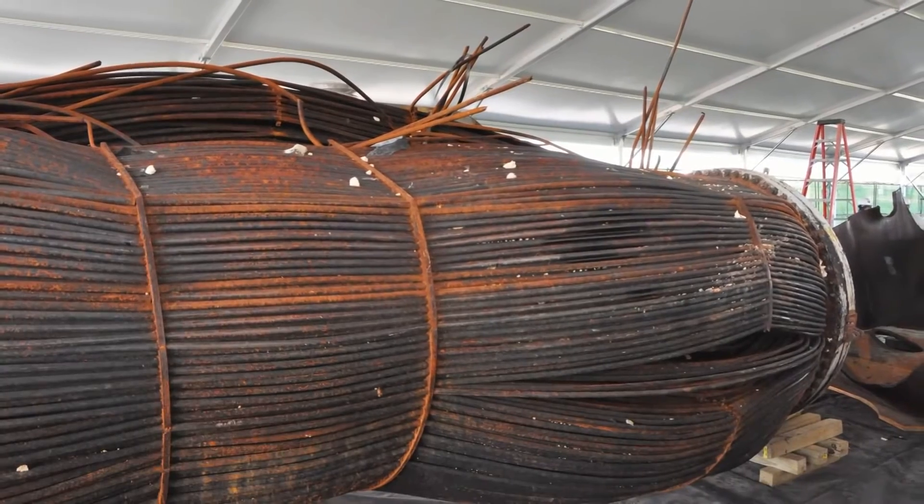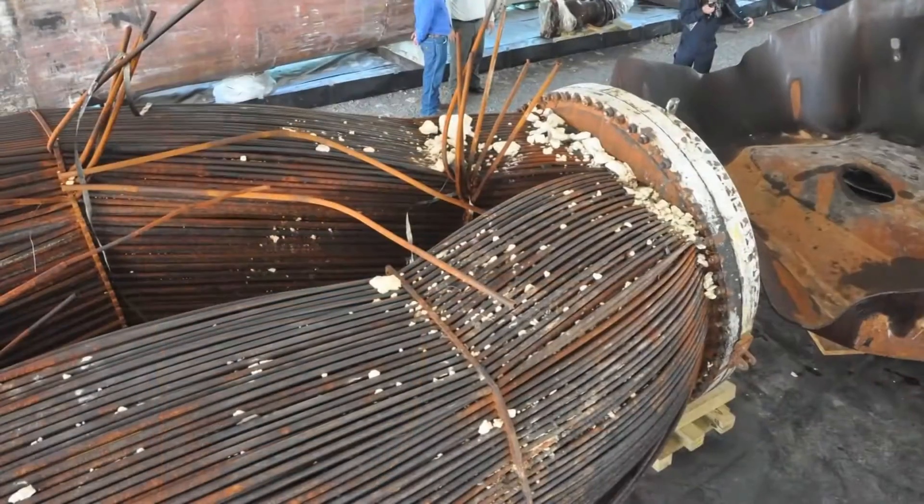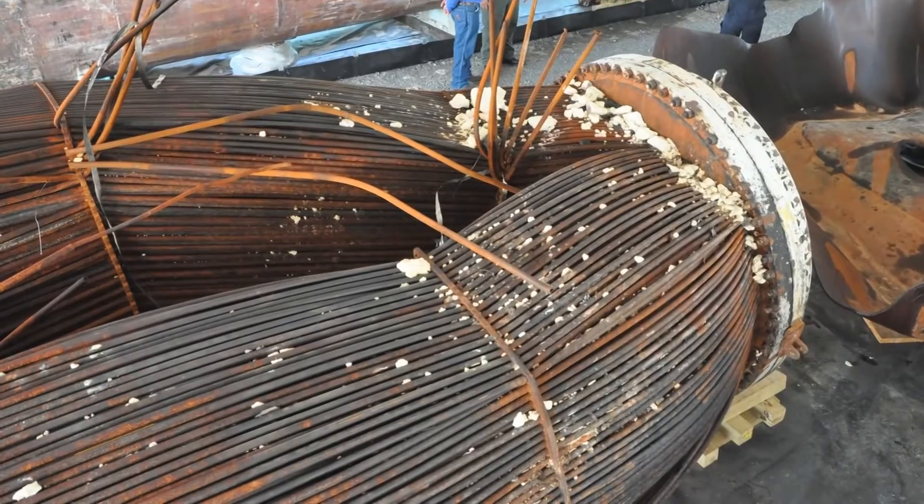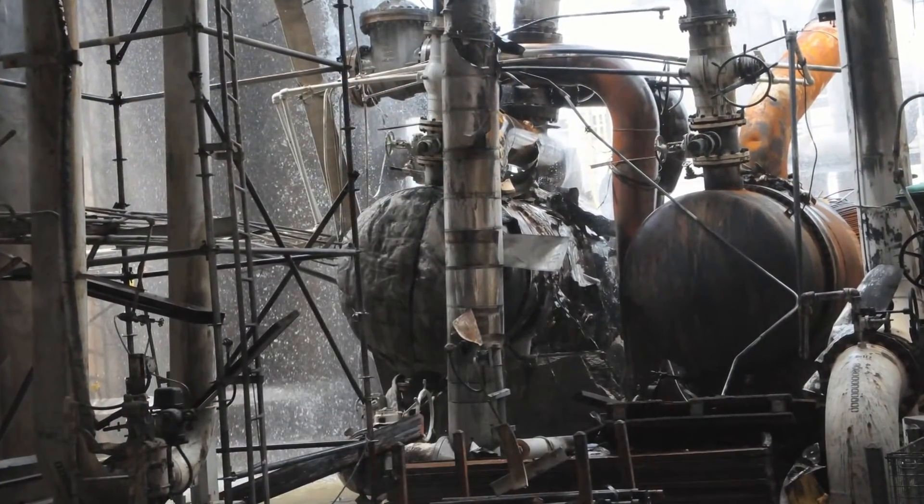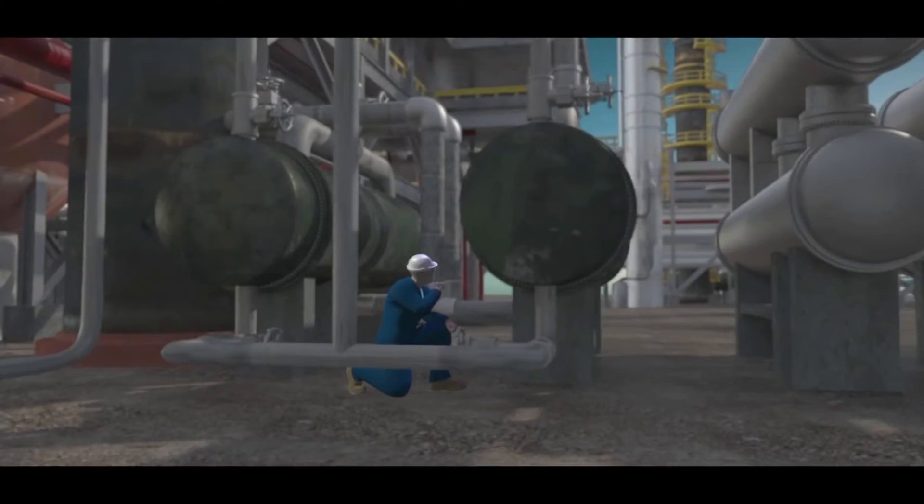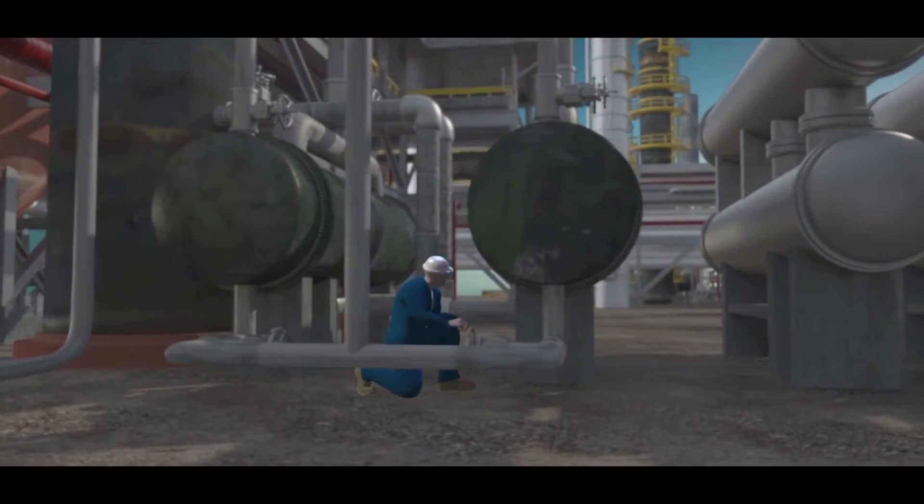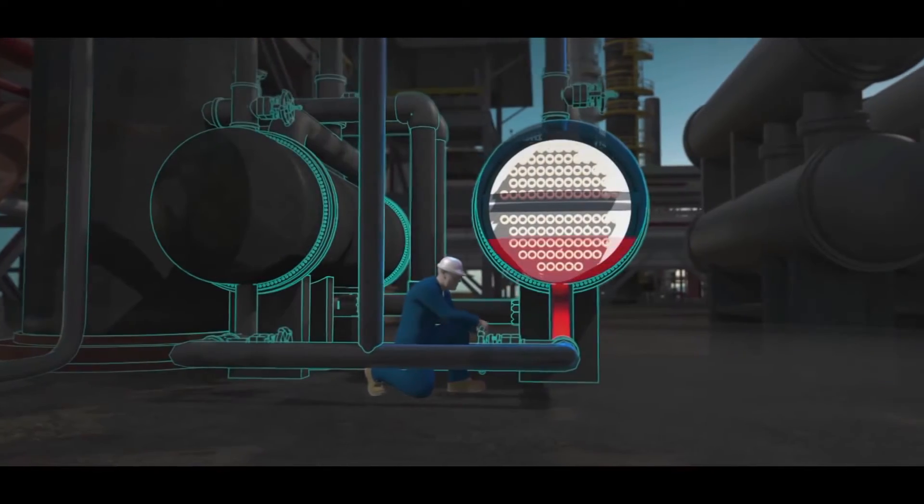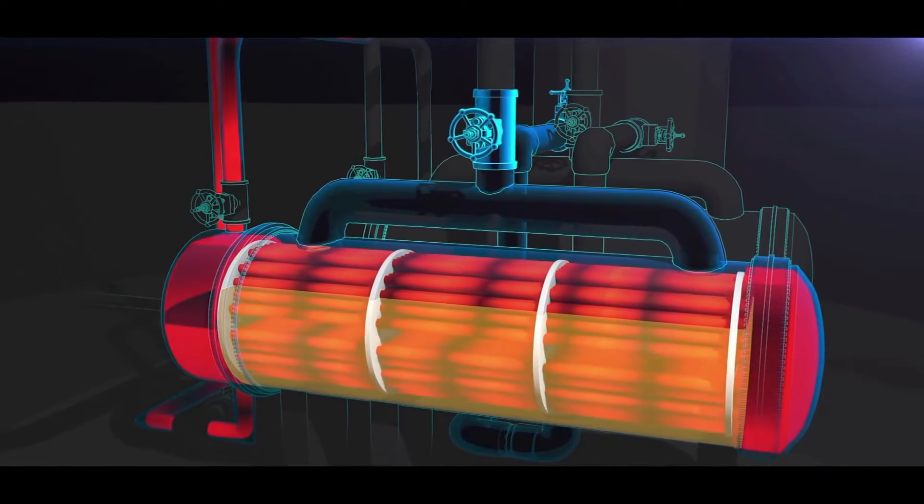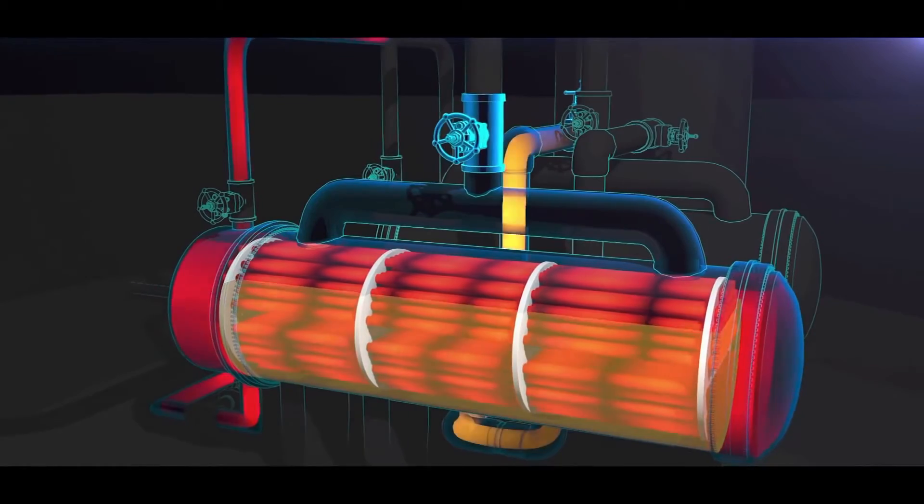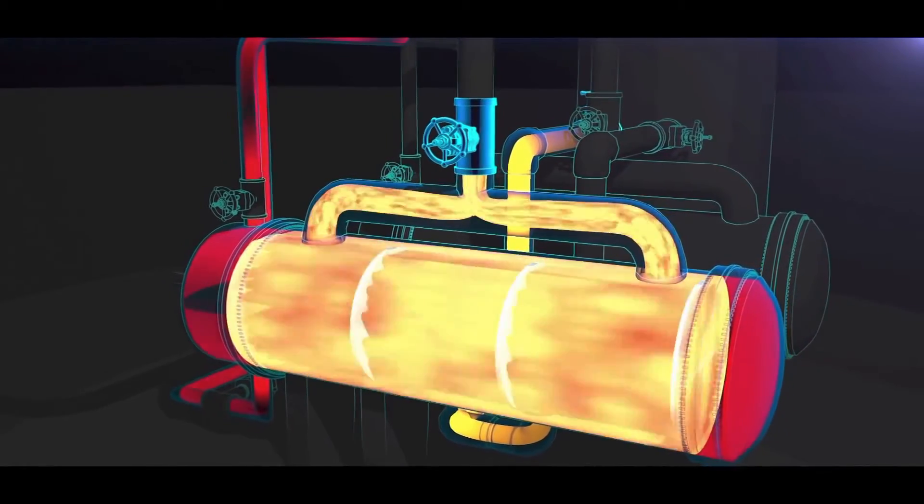But during this 16-month period, liquid propane unintentionally entered the shell of the reboiler, perhaps through a mistakenly opened valve or a leaking block valve. The CSB determined that when the operations supervisor opened the hot water valves to the standby reboiler, the propane liquid trapped inside was heated and expanded in volume to completely fill the reboiler shell.